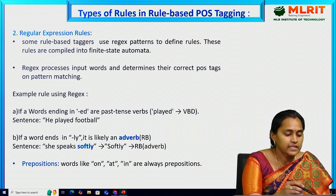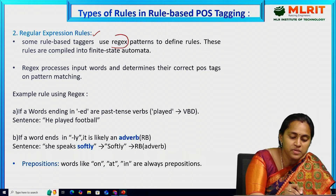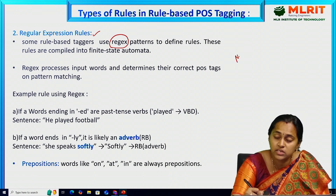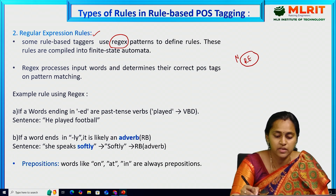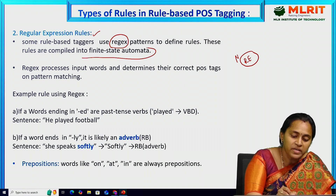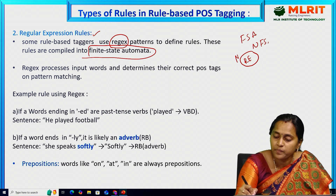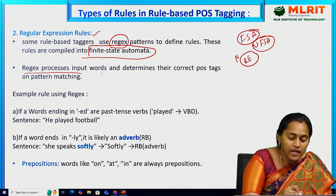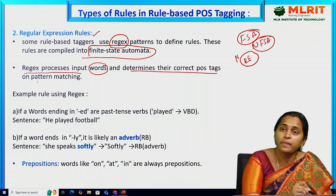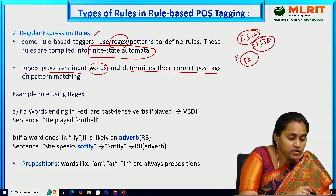The next type is regular expression rules. Some rule-based taggers use regular expressions — this is one of the major important concepts in natural language processing. By applying rules to strings, regular expressions process input words and determine their correct POS tag based on pattern matching. These rules are compiled into finite state automata (FSA), which we discussed in previous sessions.